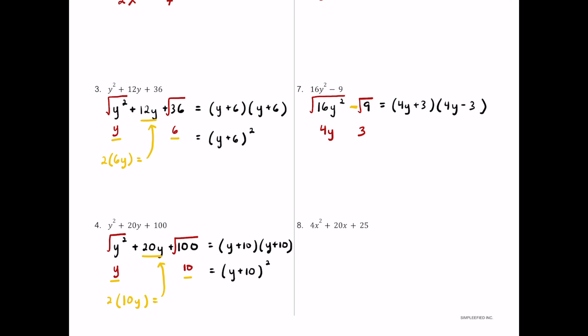For number eight we have 4x squared plus 20x plus 25. This is a perfect square trinomial. The square root of 4x squared is 2x and the square root of 25 is 5. Multiplying them gives 10x, and doubling 10x gives 20x, which matches the middle term — so it checks out. The factored form is (2x plus 5) squared.